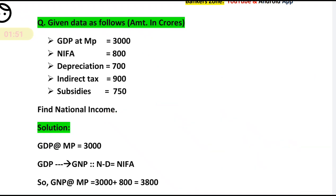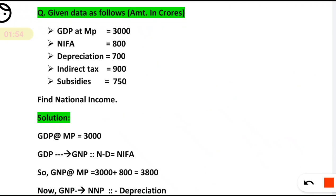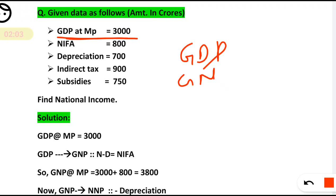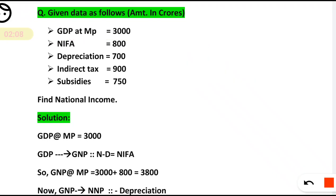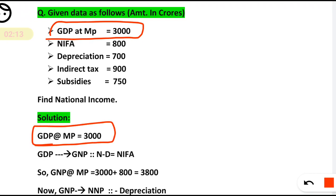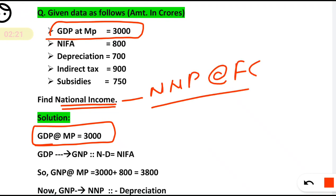Now let's move to the calculation. Whatever data they have given — GDP, GNP — you have to start from that data. Here they have provided GDP at market price as 3000. We have to compute national income, which means NNP at factor cost.